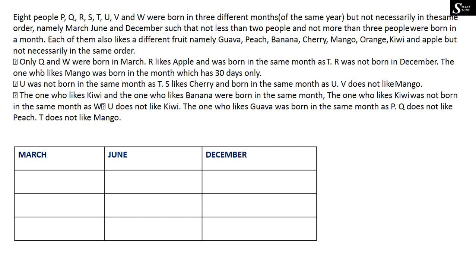The first clue states that only Q and W were born in March. This means exactly two people — Q and W — are in March, and no one else. Therefore March has two people, and since the other months must each have three, both June and December will have three people each.